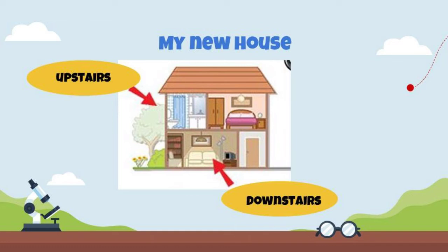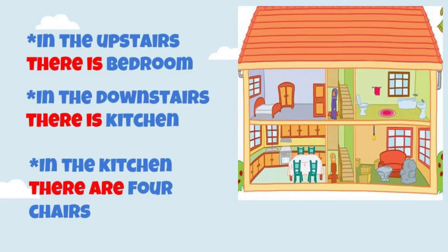Okay friends, it's my new house. Ini adalah rumah baruku. In the down, we call it downstairs — yang di bawah, kita menyebutnya lantai bawah atau downstairs. In the up, we call it upstairs — dan yang atas, kita menyebutnya lantai atas atau upstairs. In the upstairs, there is a bedroom — di lantai atas ada kamar tidur. In the downstairs, there is a kitchen — dan di lantai bawah ada dapur. And in the kitchen, there are four chairs — di dapur ada empat kursi.